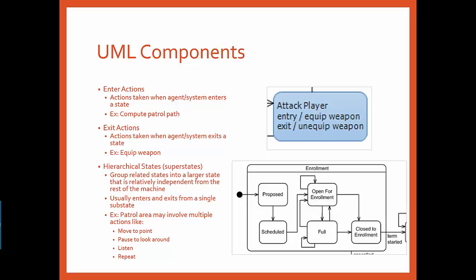For example, a guard on patrol may have a super state called patrol that describes a sequence of behaviors such as move to a point, pause to look around, pause to listen, and then repeat. Since each of these states may have their own animation and are all related, it makes sense to group them into a super state.